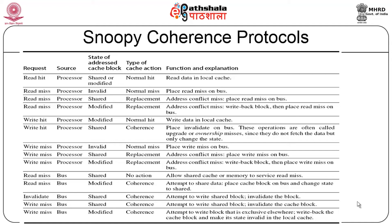If it is a write miss with the cache block in invalid state, it is a normal write miss and data is fetched from main memory. If it is a write miss with the block in shared state somewhere, it is an address conflict miss — place the write miss on the bus. If it is a write miss with the block held in modified state somewhere, the other processor holding the block must write it back, then place the write miss on the bus.